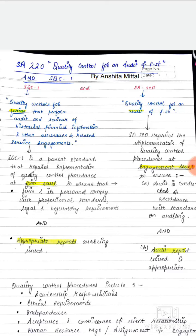SQC1 applies at the firm level and SA220 applies at the engagement level. SQC1 is 'Quality Controls for Firms that Perform Audit and Reviews of Historical Financial Information and Other Assurance and Related Service Engagements.' SQC1 applies to all those firms that perform audits, review historical financial information, and are engaged in other assurance and related service engagements.